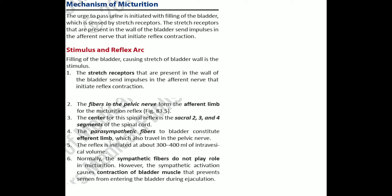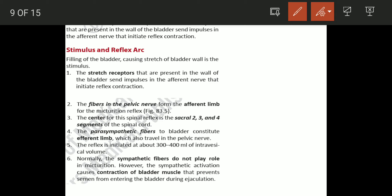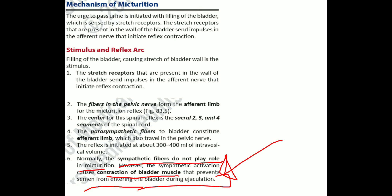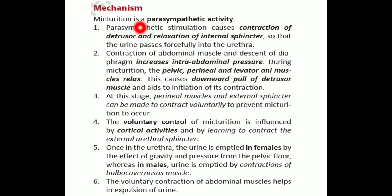Sympathetic fibers do not play a role in micturition directly; however, sympathetic activation causes contraction of the bladder muscle, preventing semen from entering the bladder during ejaculation. Micturition is primarily a parasympathetic reflex. Parasympathetic stimulation causes contraction of the detrusor and relaxation of the internal sphincter, so urine passes forcefully into the urethra.